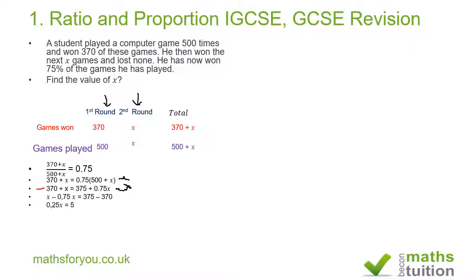Dividing both sides by 0.25: X = 5 ÷ 0.25. Since 0.25 is the same as one quarter, dividing by one quarter is equivalent to multiplying by 4, so X = 5 × 4 = 20. The answer is X = 20.